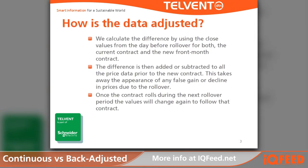How is the data adjusted? We calculate the difference by using the close values from the day before rollover for both contracts — the current contract and the new front month contract. The difference is then added or subtracted to all the price data prior to the new contract. This takes away the appearance of any false gains or declines in prices due to the rollover.